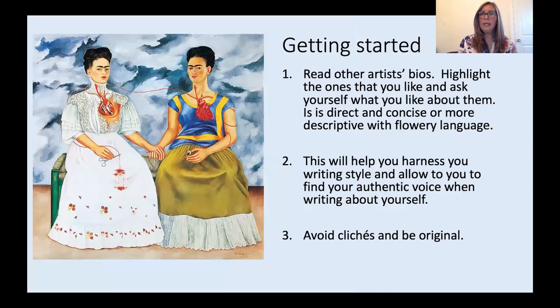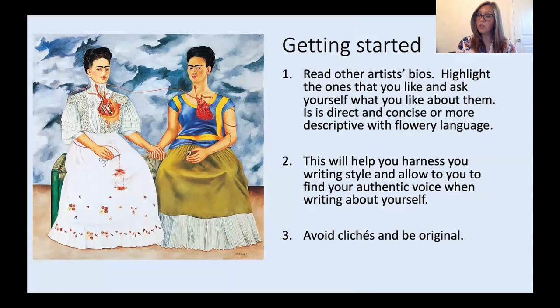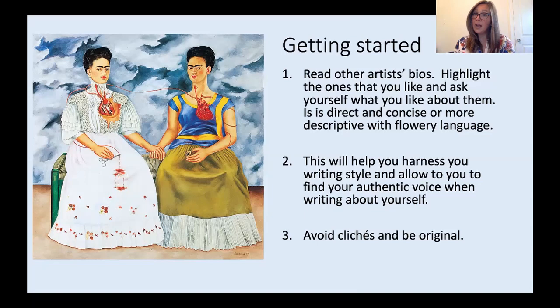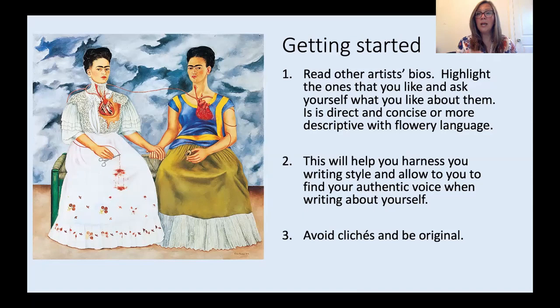Getting started — how do you do this? It's really overwhelming. My best recommendation is to go and read other artists' bios. You can go to the library or look up online other artists' short bios, and highlight the ones you like. You're going to find three, four, five that you like the writing style of, and then ask yourself: do you like the ones that are direct and concise, or the ones that are more descriptive with flowery language? That will help you harness your writing style and find your authentic voice when writing about yourself. Read other people's bios, but stay true to yourself and see what resonates with your voice.